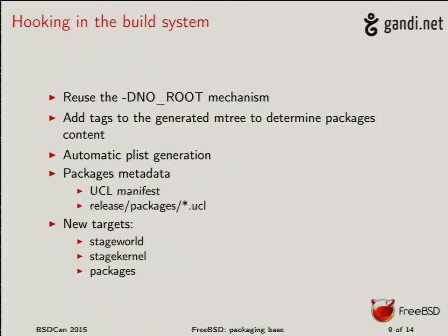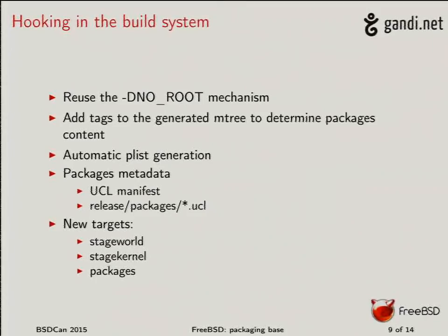We added a couple of targets to simplify our lives. The new target 'make stageworld' is a mix of installworld and distributeworld — it installs everything including /etc files into a staging area. From this staging area we create all packages based on the mtree we've obtained. We also have 'create world packages' (which creates packages from world assuming stageworld has already run), and the same for kernels: 'stage kernel' and 'create kernel packages.' The high-level 'packages' target does everything: build world, stage world, create world packages.